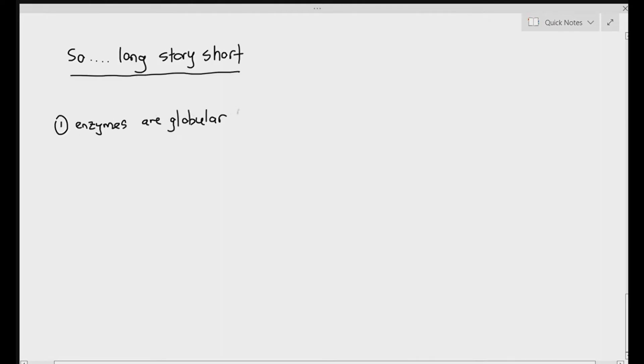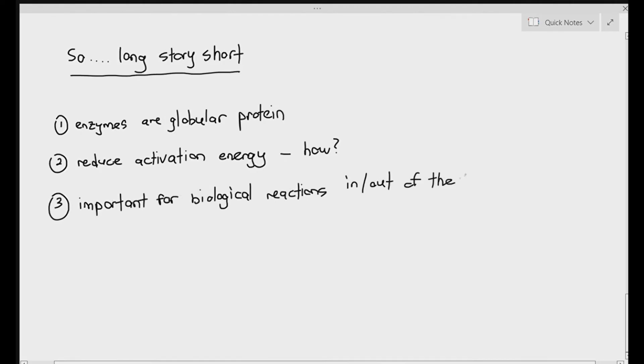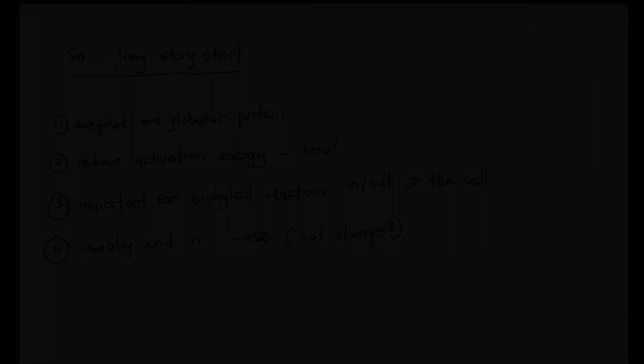So long story short, enzymes are just basically globular protein. They reduce the activation energy. How do they reduce the activation energy? I'll talk about that later. So they reduce the activation energy required for a chemical reaction to happen, and they are important for biological reactions in and out of the cell. And of course, they usually end in the alphabets ACE, although not all the time, most of the time anyway.